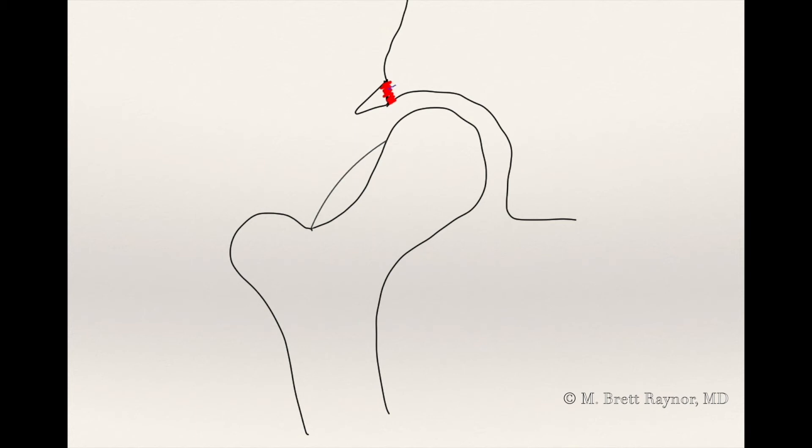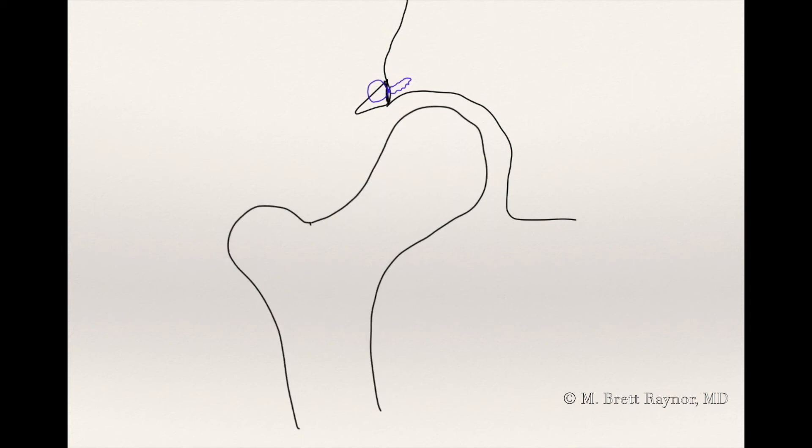We can place an anchor in the bone which allows us to sew that labrum back to the edge of the socket, stabilizing it and allowing the tear to heal. We can then trim down that cam bump so that there's relatively more normal anatomy, allowing the hip to flex up without bumping into the labrum, which protects the repair and keeps the labrum from tearing again.